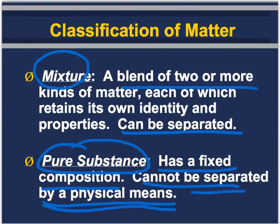A mixture is a blend of two or more kinds — a salad is a good example because you can pick the different parts out. We're going to be talking about sand, salt, and water and how we're going to separate that, so keep that in mind. A pure substance, on the other hand, can't be separated. Examples of pure substances would be water, hydrogen peroxide, gold, and silver.